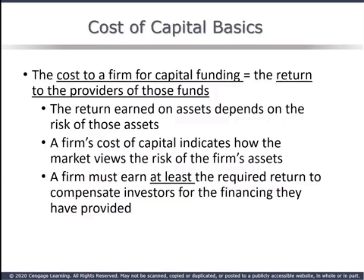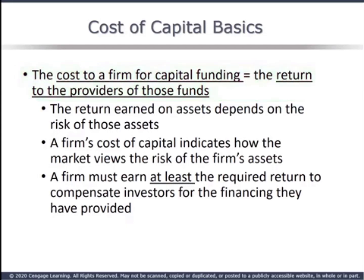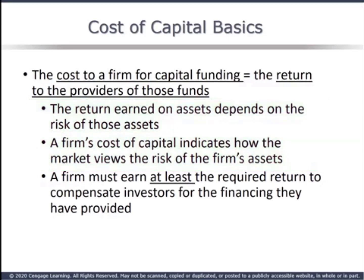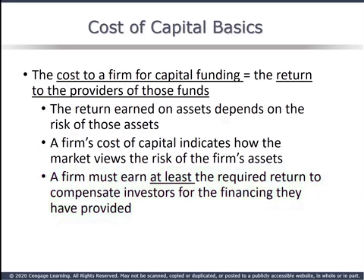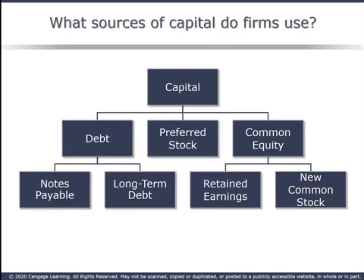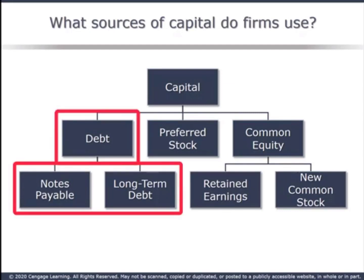First, some definitions. The cost of capital to a firm is the return demanded by investors. The return on assets depends on the risk of those assets and how the market views that risk. Put simply, a firm must earn at least the cost of money on any investment it pursues. You wouldn't borrow money at 10% to invest in a project projected to return 8%. A firm acquires capital from a variety of sources. Debt can come from short-term notes payable or long-term debt. We would only consider notes payable as a source of capital if a firm uses it continuously as a source of financing; we won't be including it in our study.